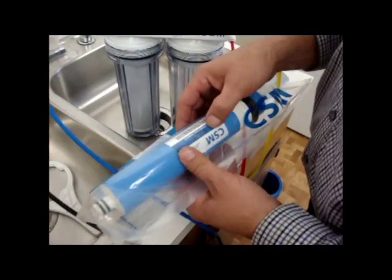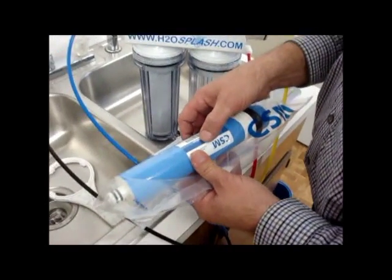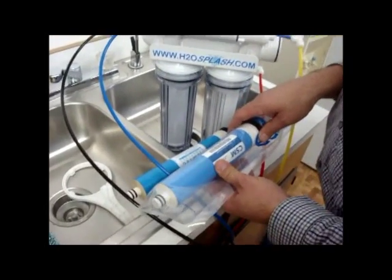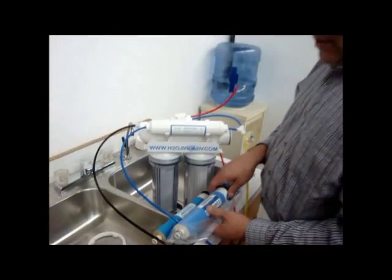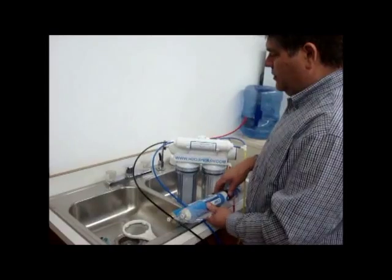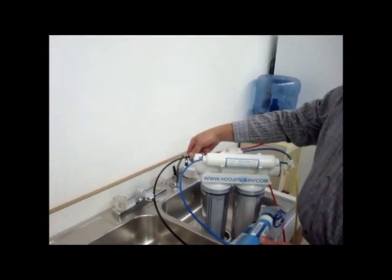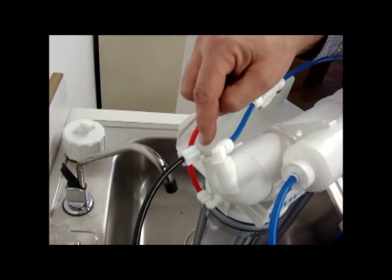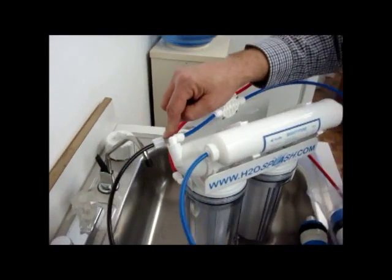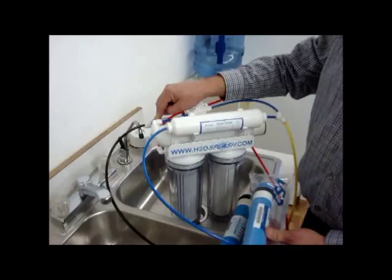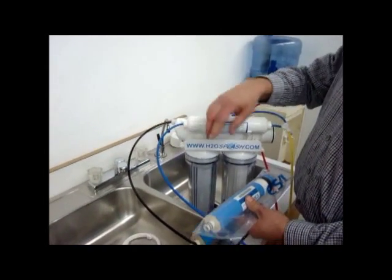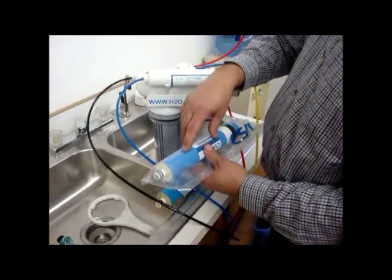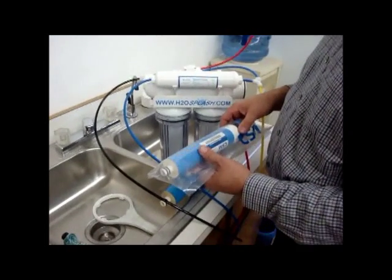This one in the bag is an 1812-80. But if you are changing membrane production rates, you also want to make sure you get a drain flow restrictor, which in this particular one is in the elbow of the drain outlet. That would match or go along with the particular membrane that you have.